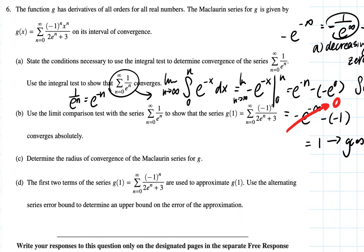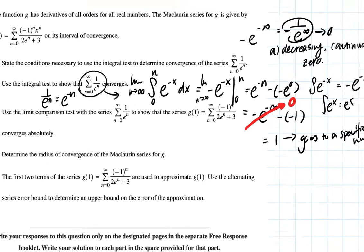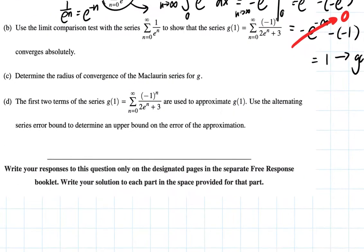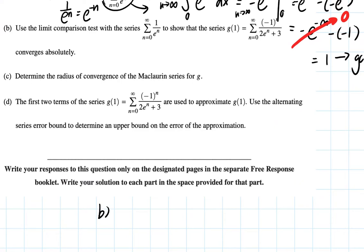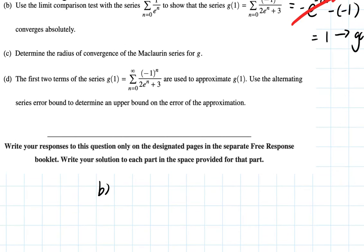Part B asks us to use the limit comparison test with the series from n equals zero to infinity of one over e to the n power to show that g of one converges absolutely. We're comparing the two series by finding their ratio.